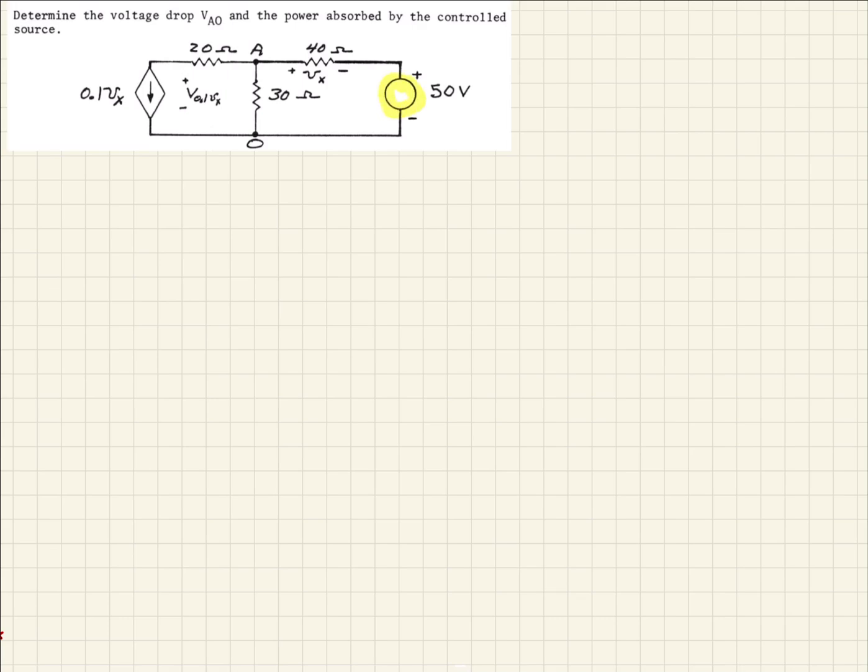We have a 50 ohm resistor, and then we have a voltage-controlled dependent current source right there. And so they're asking us first to determine the voltage drop VA0, so here is A and here is 0, so that's basically the voltage drop across that resistor. And then they're asking us to find out what the power absorbed by this controlled source is, so two parts to this problem.